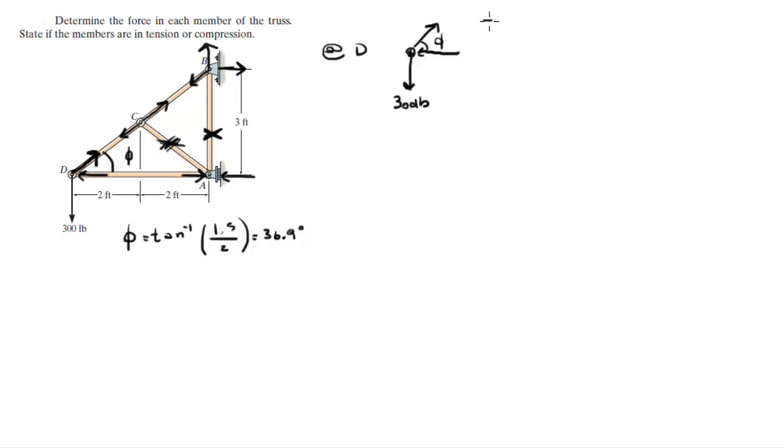So, we know that the sum of the forces in the Y is equal to zero, so you know that DC, because this is DC, sine of phi minus 300 is equal to zero.